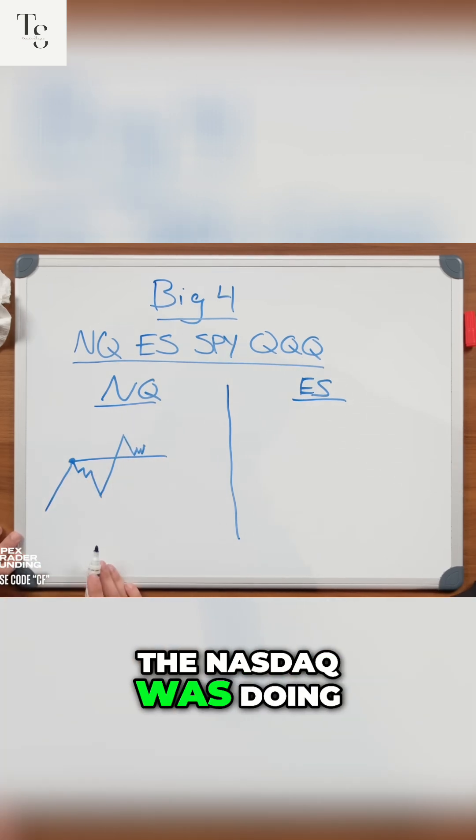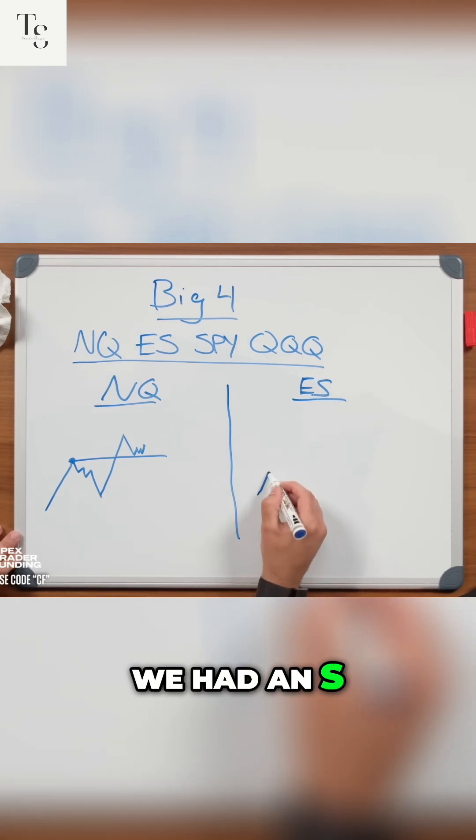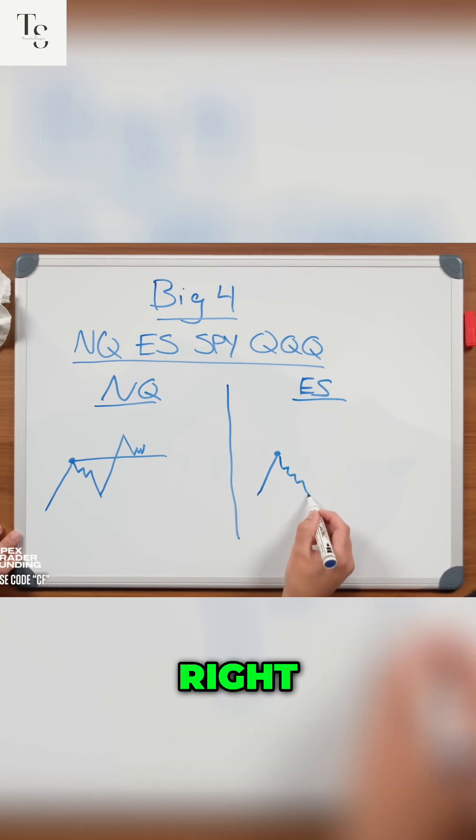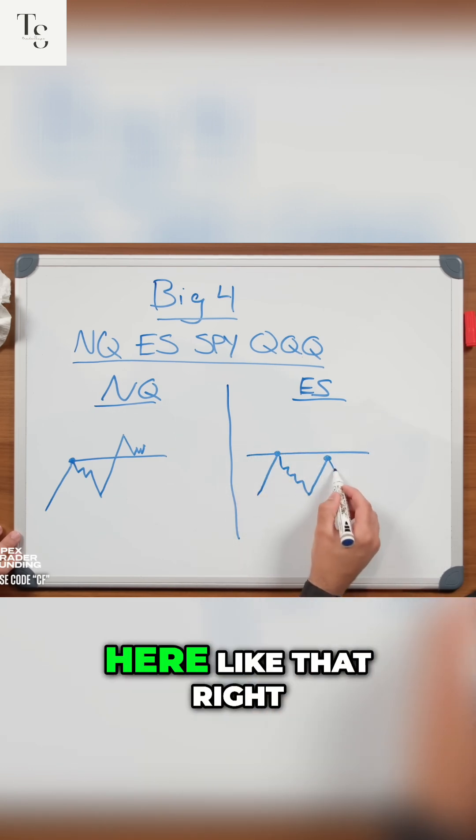This was exactly what the NASDAQ was doing. At that same exact time, the S&P had that high, moved back lower, moved back higher, and rejected an equal high here.